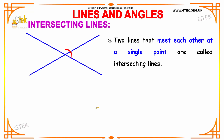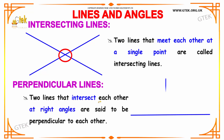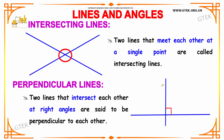Next we are going to study about intersecting lines. Two lines that meet each other at a single point are said to be intersecting lines. Here you can see two lines meeting at a point. If two lines intersect each other at right angles, then they are said to be perpendicular lines. Here these two lines are intersecting at a right angle, and hence they form perpendicular lines.